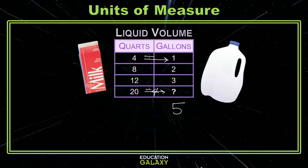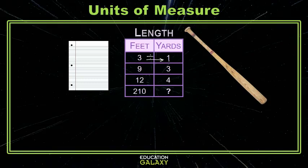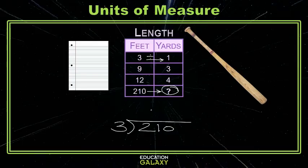Pretty easy, right? How about one for length? A baseball bat is about a yard, and a piece of paper is about a foot. So the foot is the smaller unit of measure. We're going from the smaller unit to this bigger unit, so that is division. We are given that there are 3 feet in one yard, so we divide by 3. If we divide 210 by 3, we get 70 yards, which equals 210 feet. Those are some samples with the customary system.